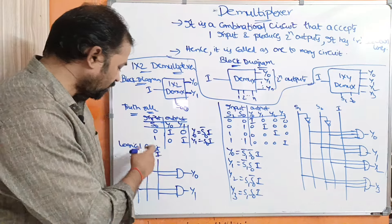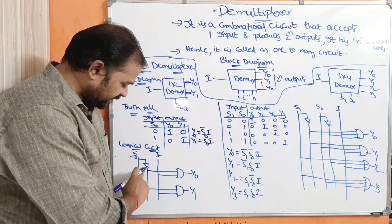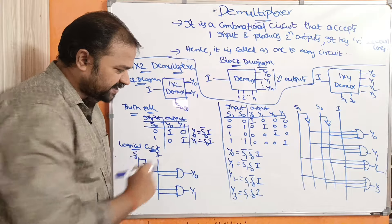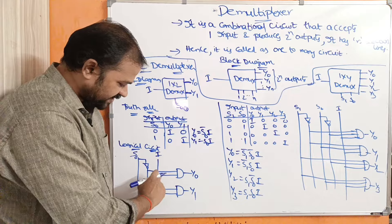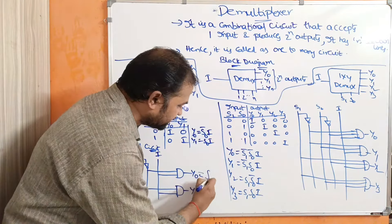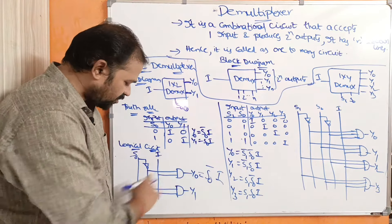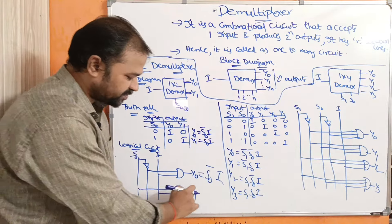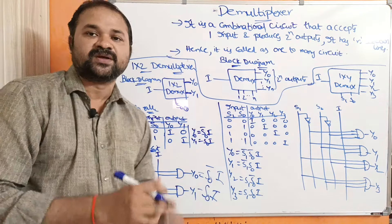Now let us see the logical circuit. We have two lines: one represents s0 and the other represents s0 bar. The input is i. For y0, we perform the AND operation of s0 bar and i, so y0 = s0̄·i. For y1, this AND gate accepts s0 and i as inputs, so y1 = s0·i.